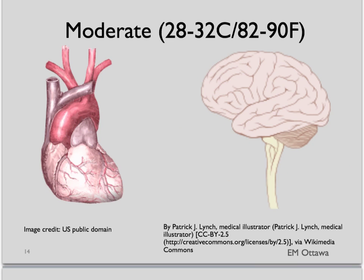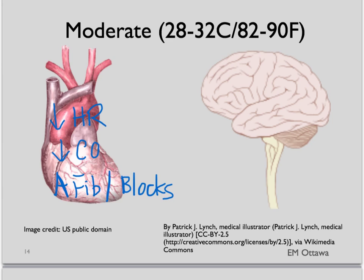As we get to moderate hypothermia, the core body temperature has dropped to between 28 to 32 degrees Celsius. The heart now starts to slow down and cardiac output decreases. Arrhythmias now start to occur, such as atrial fibrillation or heart blocks. In terms of the brain, the patient will have decreased level of consciousness and ataxia. Shivering now stops.